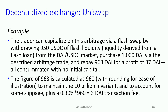So let's go through the details of how this works using the flash swap. What we're going to do — and I've got a diagram that explains this — is withdraw 950 USDC as flash liquidity. This is derived from the DAI/USDC market, and then we purchase 1,000 DAI via the arbitrage trade. Then we repay 963 DAI and end up with a profit.